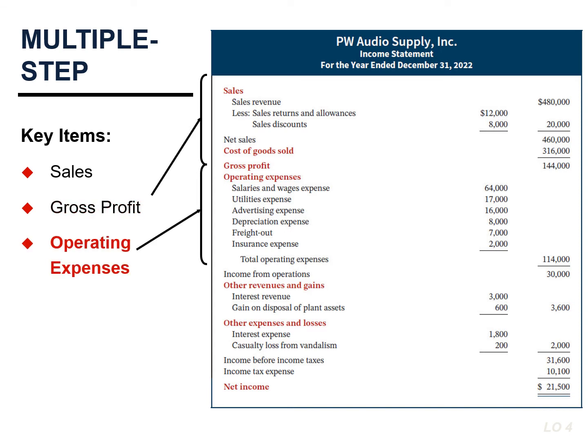Operating expenses are the next component in measuring net income for a merchandising company. Operating expenses were $114,000. The company determines its income from operations by subtracting operating expenses from gross profit. Income from operations is $30,000, calculated by subtracting operating expenses of $114,000 from gross profit of $144,000.